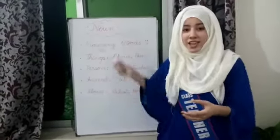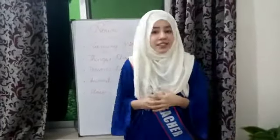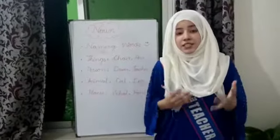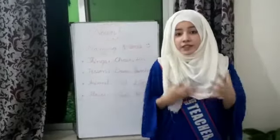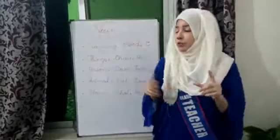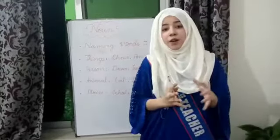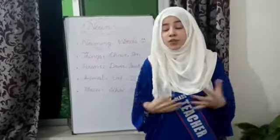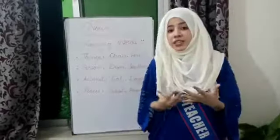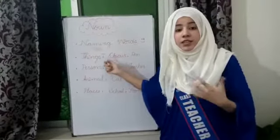As you all know, there are many things around us and everything occupies a specific name. Those names are known by a specific word which is called a noun. Everything around us is a noun because all things have a name. So we can say that a noun is a naming word.